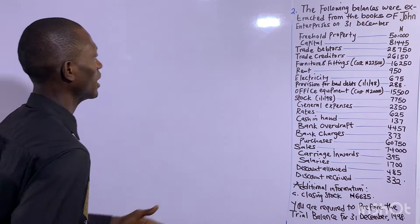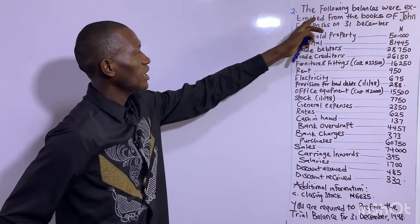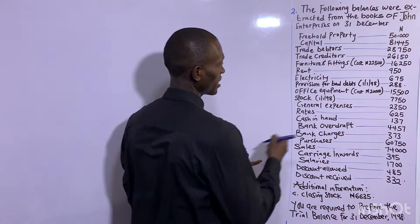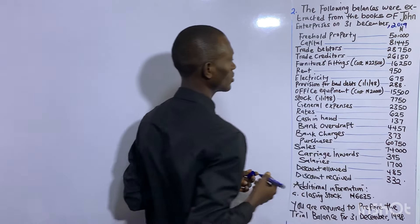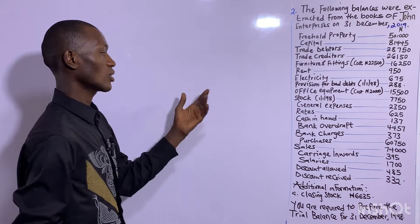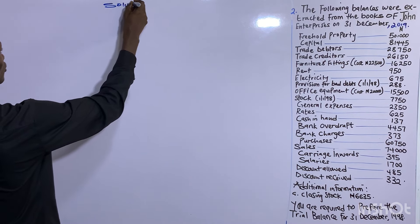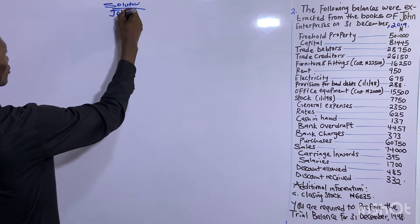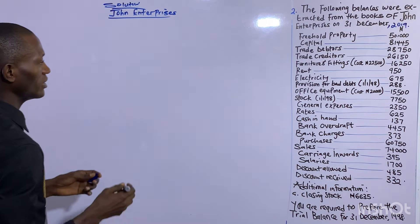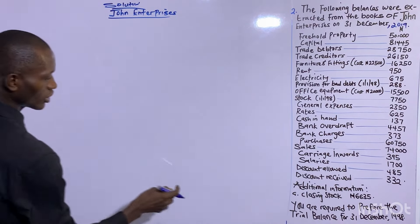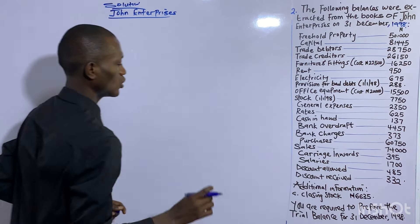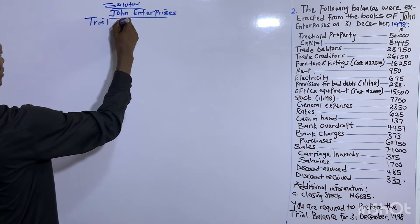The second question: the following balances were extracted from the books of John Enterprise as at 31st December 1998. We need to extract the trial balance. The solution will be headed 'John Enterprise, Trial Balance for the year ended 31st December 1998,' with columns for particulars, debits, and credits.